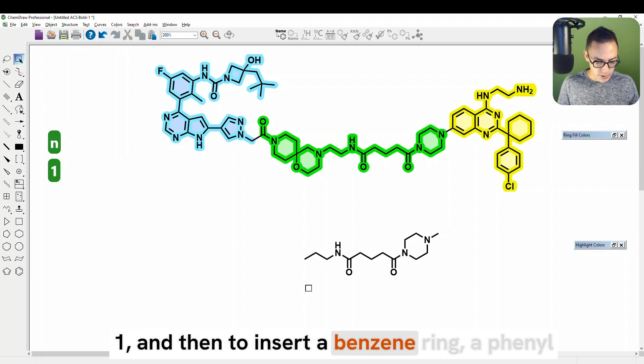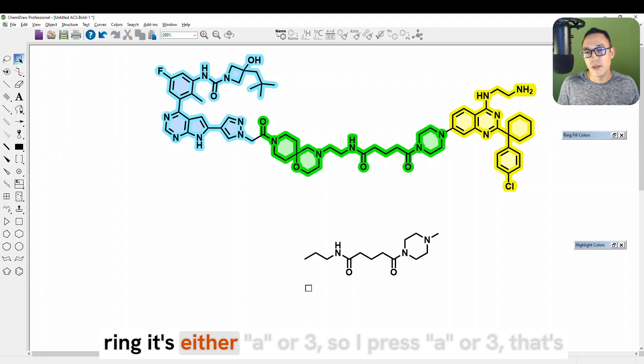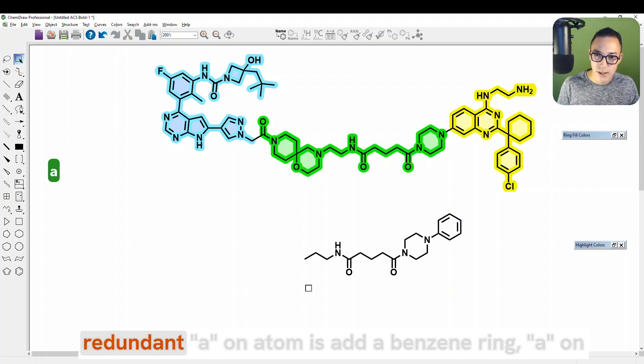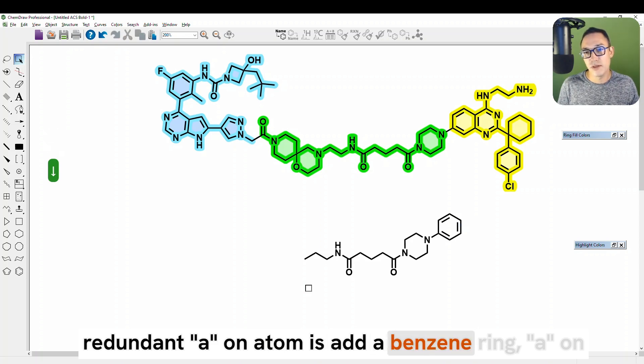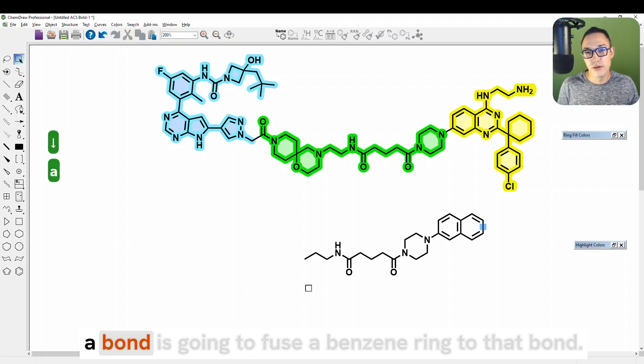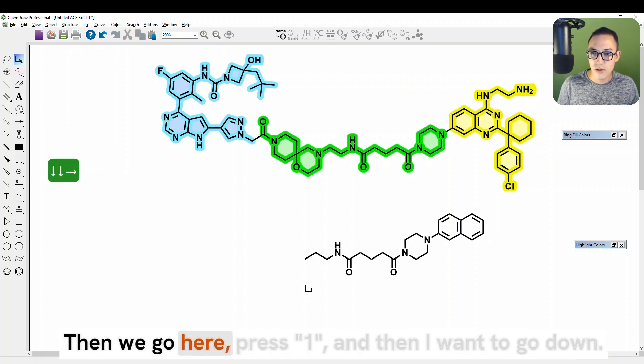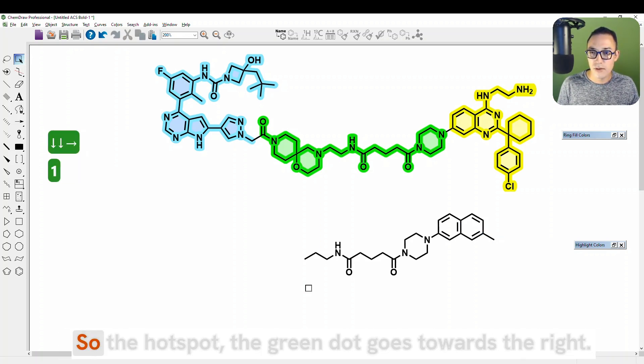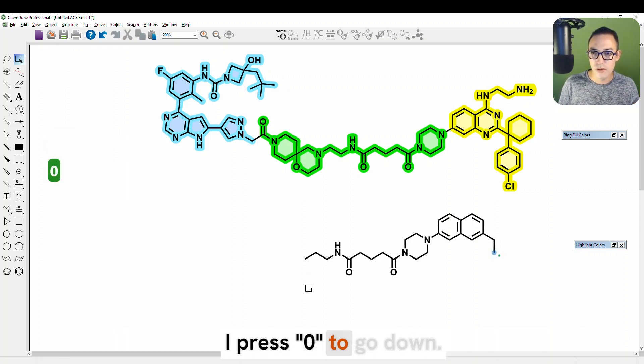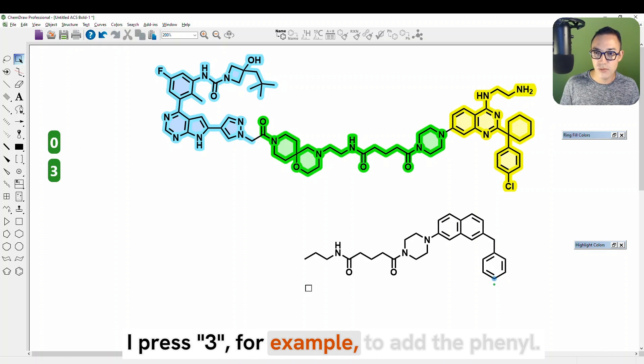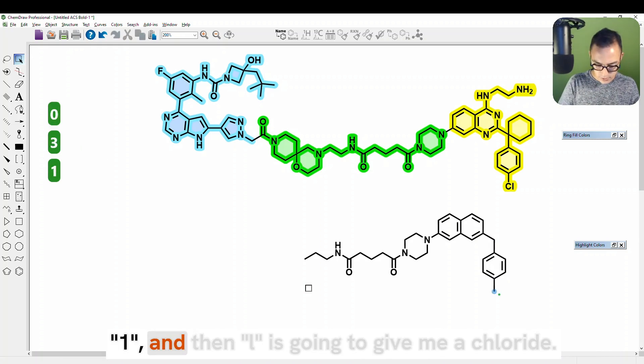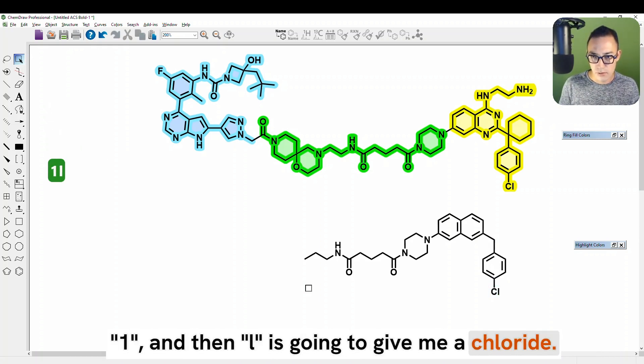So then I press N, then I press one. And then to insert a benzene ring, a phenyl ring, it's either A or three. So I can press A or three, that's redundant. A on atom adds a benzene ring. A on a bond is going to fuse a benzene ring to that bond. Okay. Then we go here, press one, and then I want to go down. So the hotspot, the green dot goes towards the right. I press zero to go down, I press three, for example, to add the phenyl, one, and then L is going to give me a chloride.